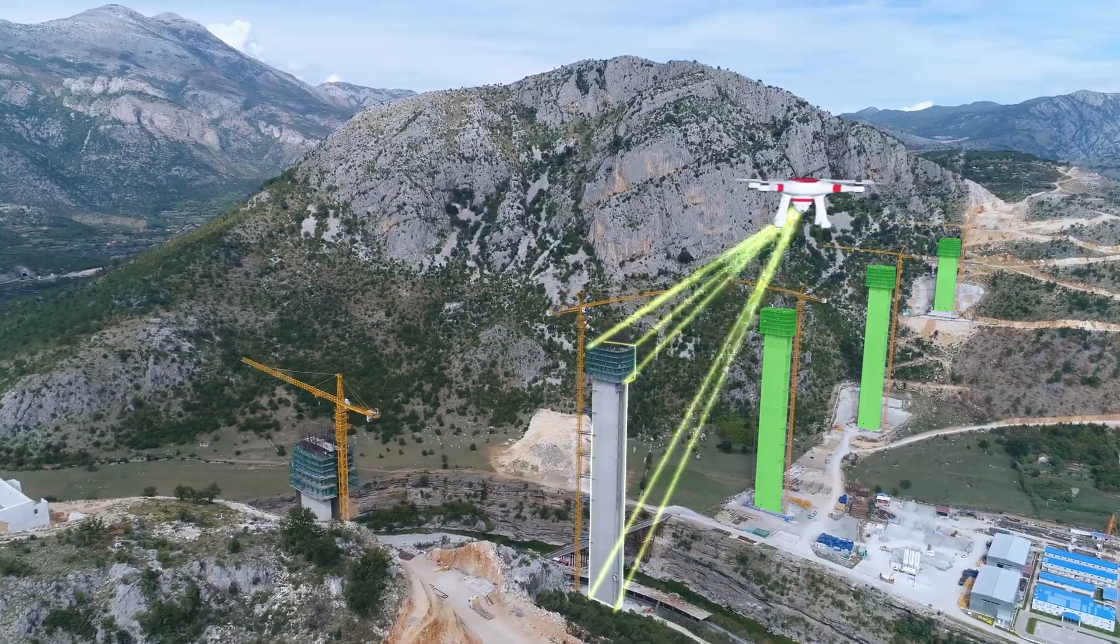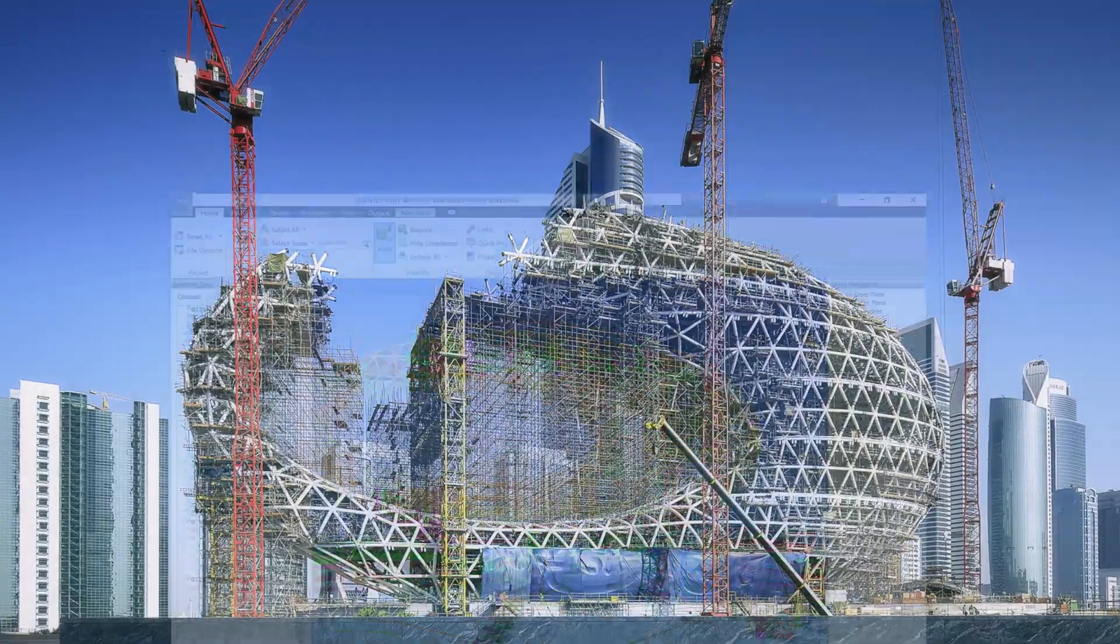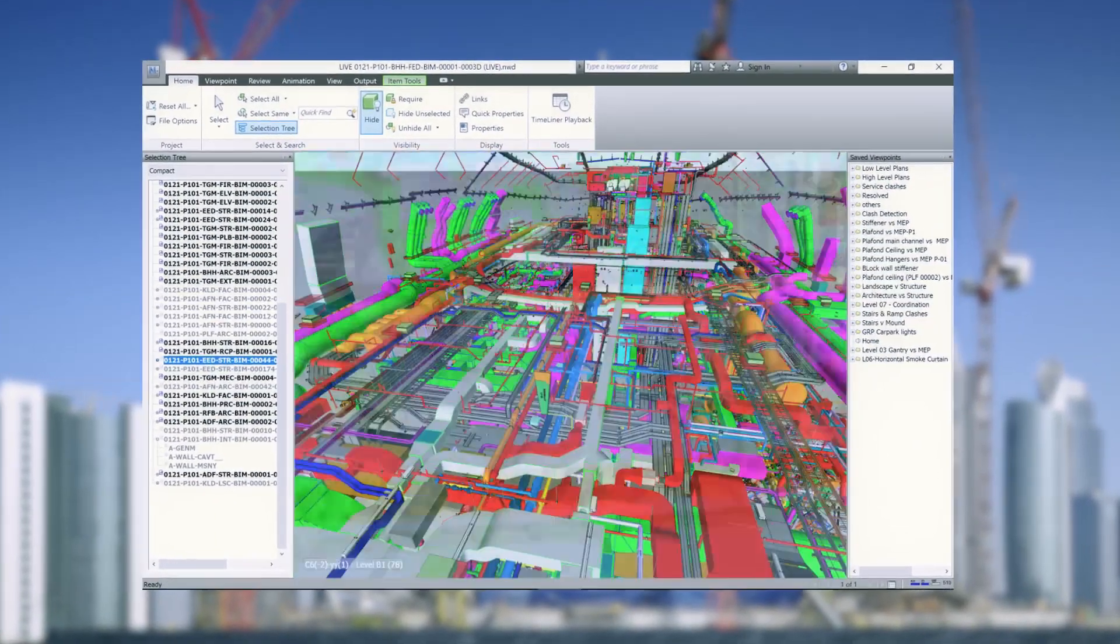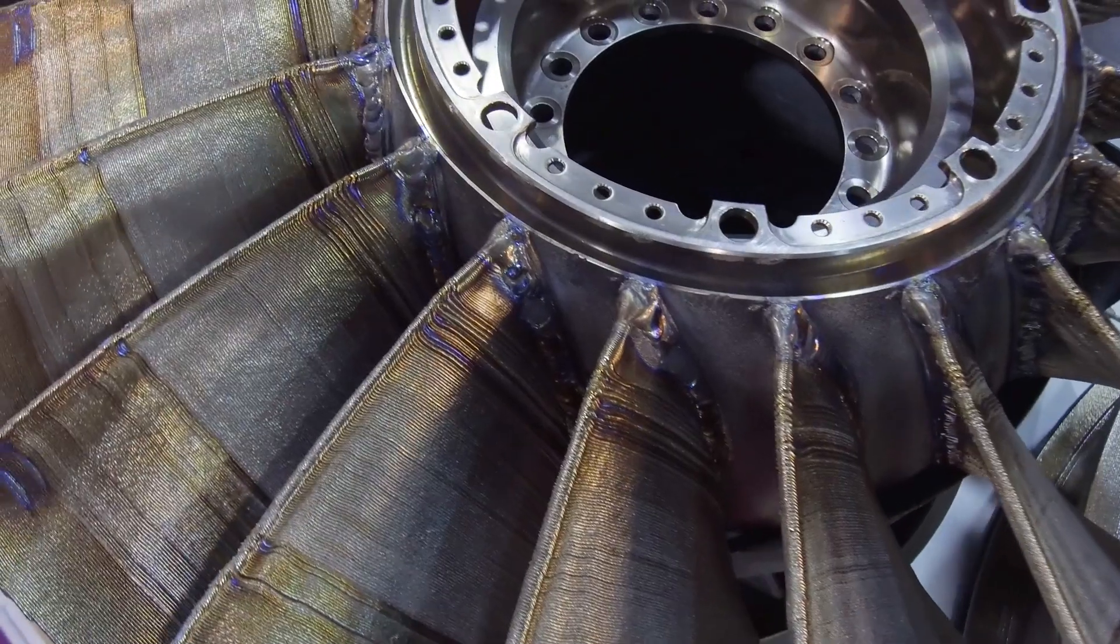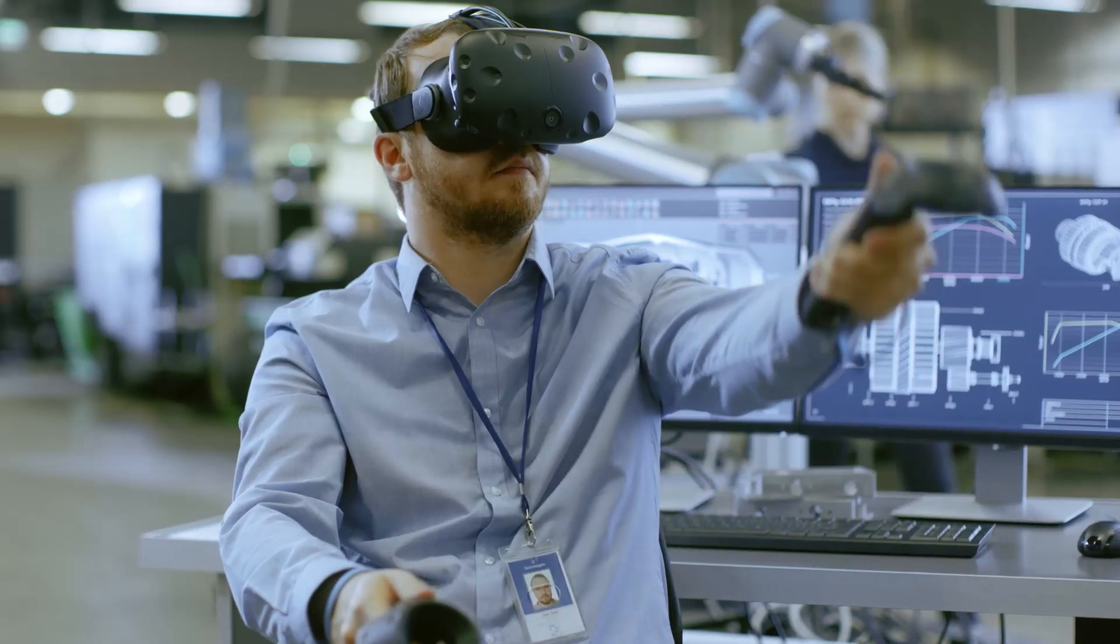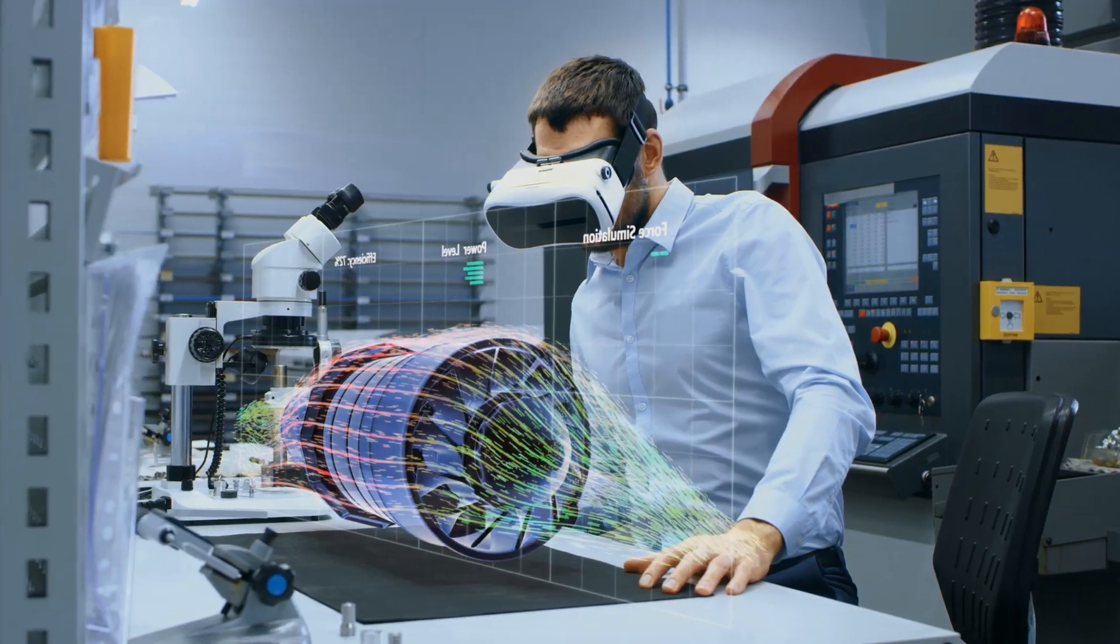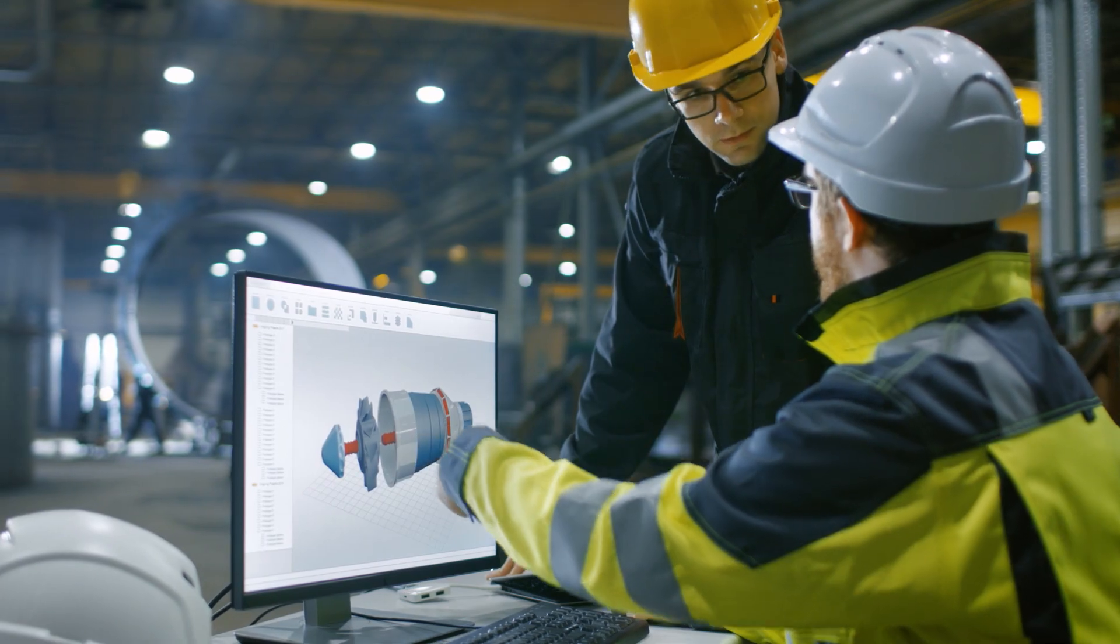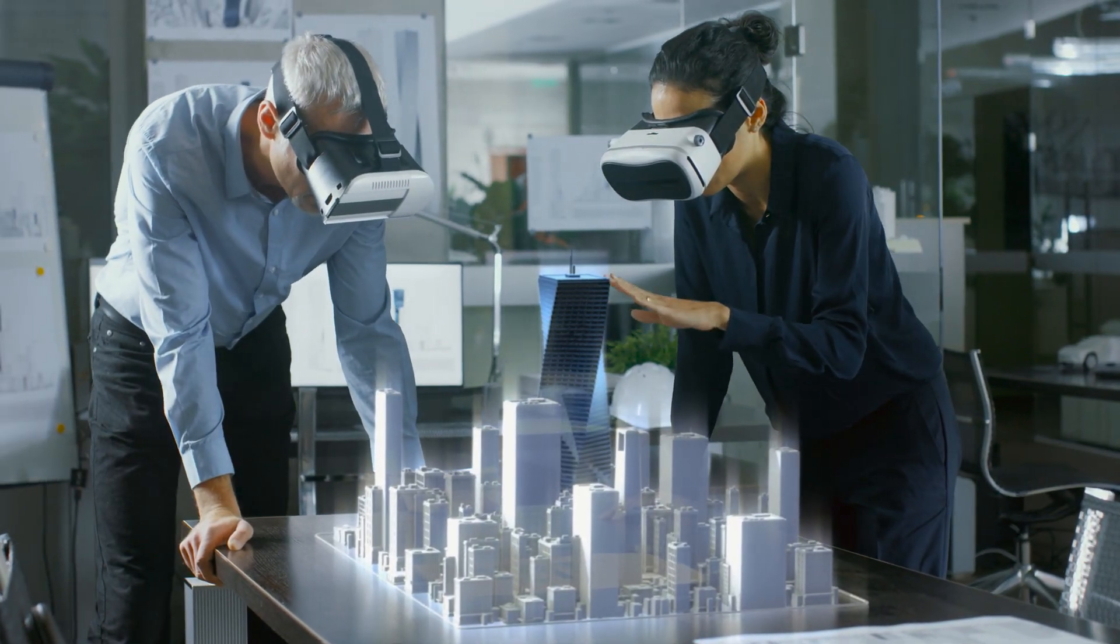Microtunneling, use of drones, building information modeling, advances in prefabrication including 3D printing and augmented reality are some of the examples of how technology is helping to build faster, safer, more sustainable infrastructure.